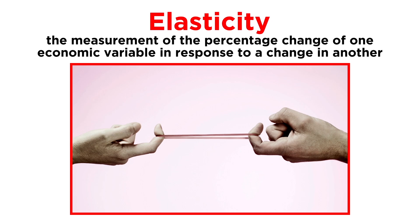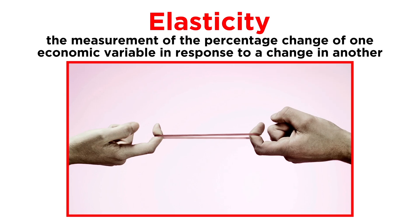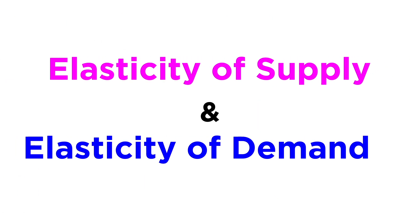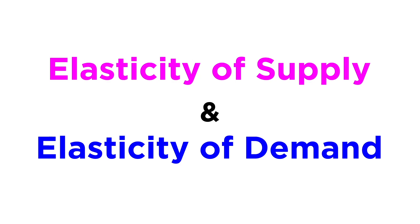Elasticity is the measurement of the percentage change of one economic variable in response to a change in another. In other words, it involves looking at how much one thing has changed based on an incremental change for some other thing. Let's now look at two types of elasticity — elasticity of supply and elasticity of demand.